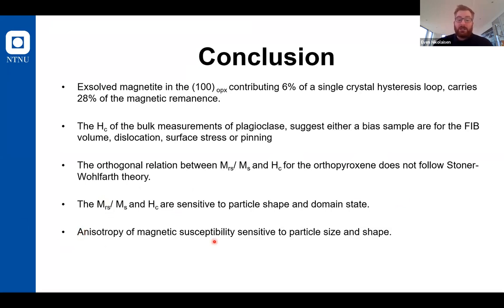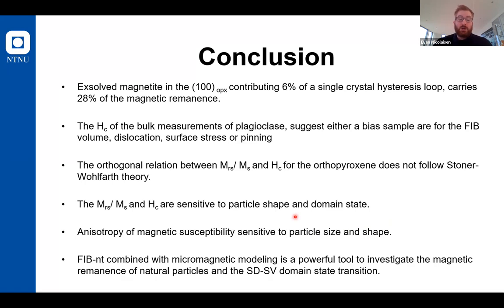The magnetic susceptibility calculations also show that even though we have an inverse relationship in the plagioclase — as expected for close to single domain particles — we did not observe the same in the OPX, which suggests that magnetic anisotropy might be very sensitive to particle shape and particle size. With focus ion beam nanotomography, we have a powerful tool to investigate magnetic remanence of natural particles. The combination of focused ion beam slice and view, together with EBSD and micromagnetic modeling, allows us to look into the dependencies and interactions between particles and also the shape and size correlation with domain states. Thank you so much for your attention and I welcome any questions.